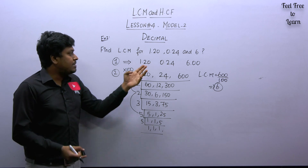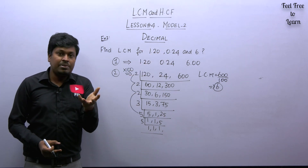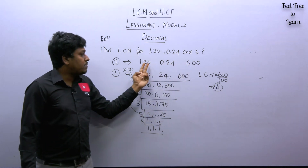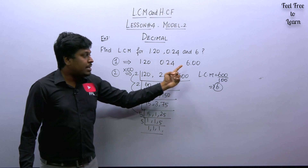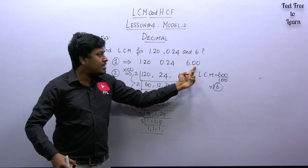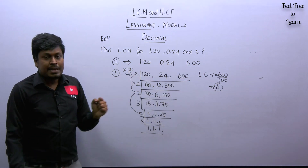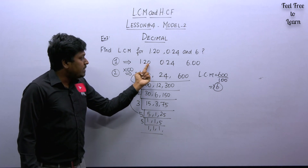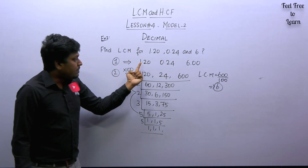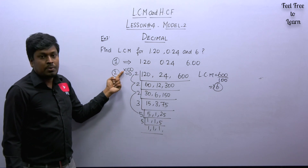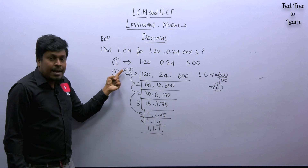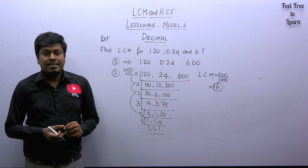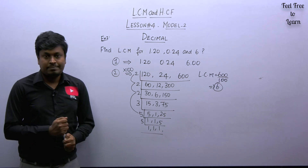By seeing those numbers, don't think it is a difficult question — it is very simple. Step one: make all numbers have equal decimal values. After decimal point we have two numbers in the first two values, so put 0 zeros after 6 to make 6.00. Step two: multiply by 100 since there are two decimal places. After finding LCM, divide by the same number 100. The final LCM is 6, which is the answer for question two.